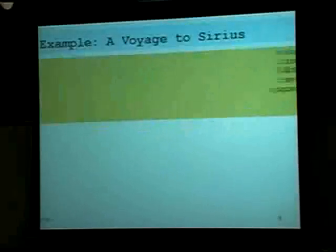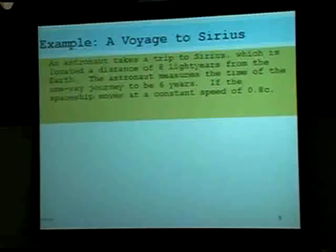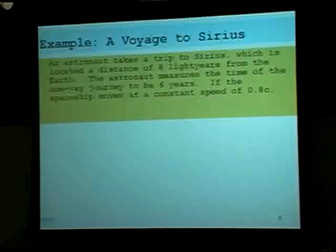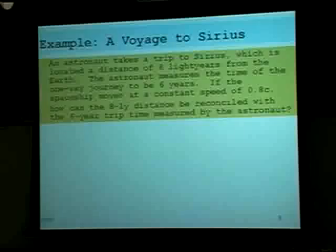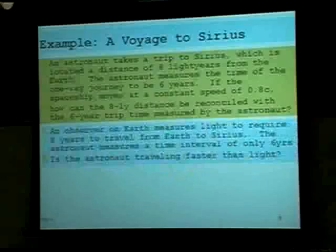Here's an example — the voyage to Sirius. The astronaut takes a trip to Sirius, which is located at a distance of 8 light years from the Earth. The astronaut measures the time of the one-way journey to be 6 years. If the spaceship moves at a constant speed of 0.8c, how can the 8 light year distance be reconciled with the fact that the time for the astronaut is only 6 years?